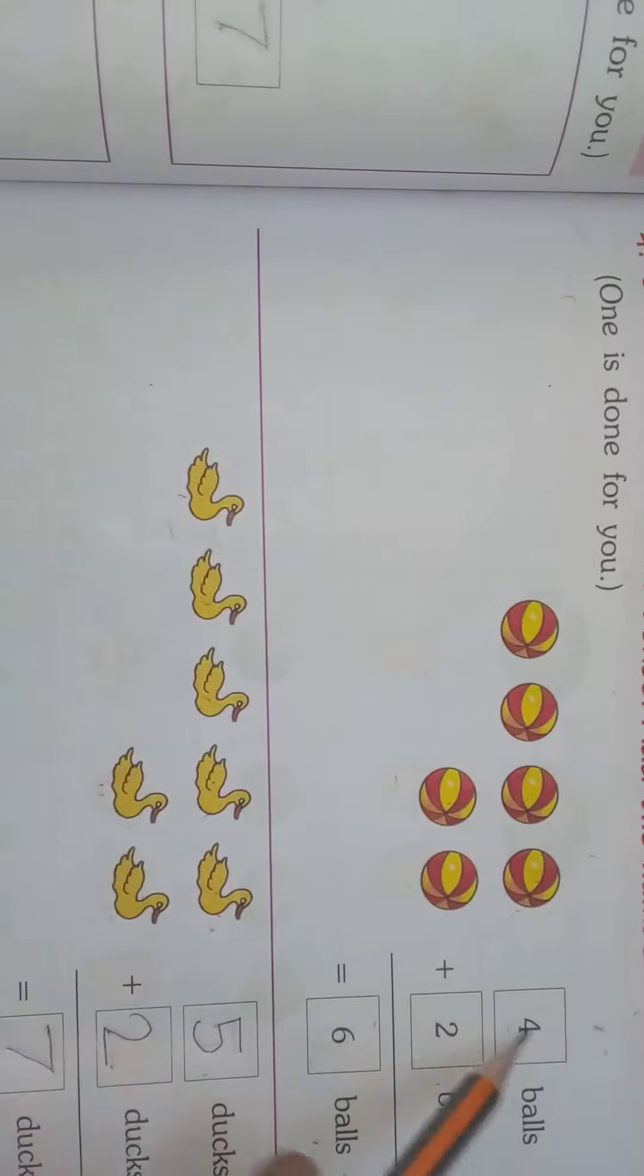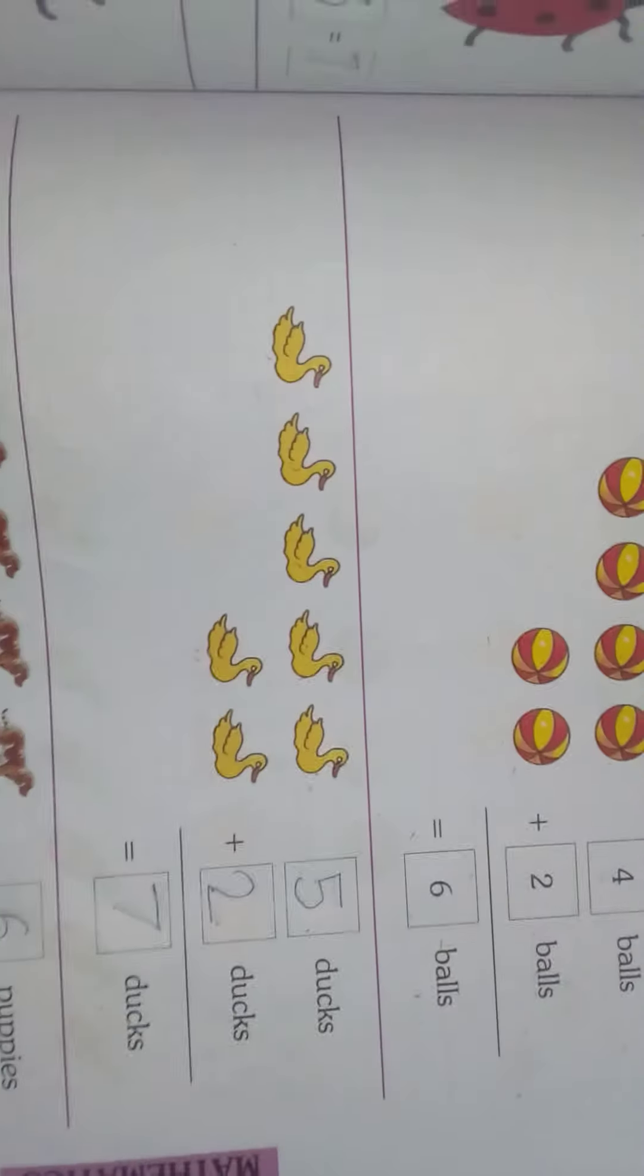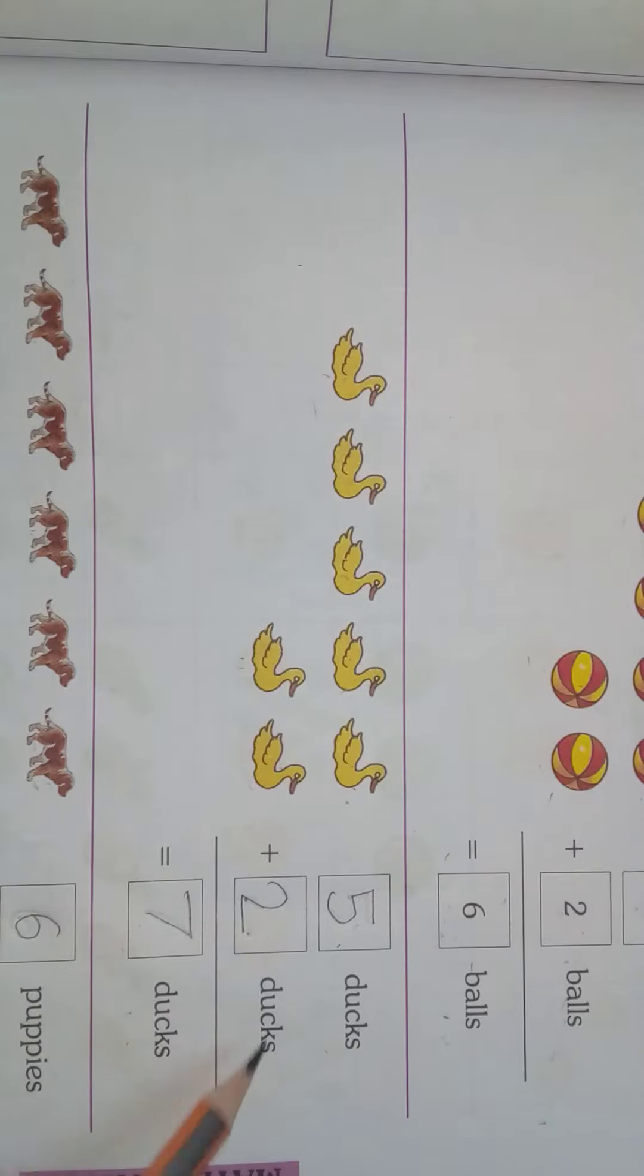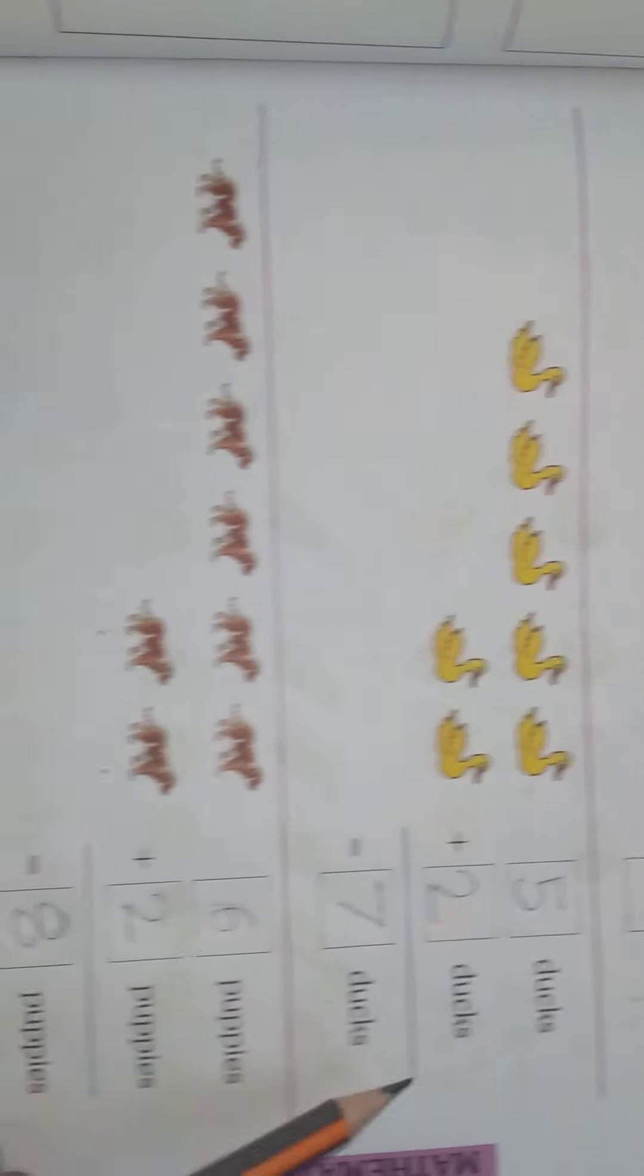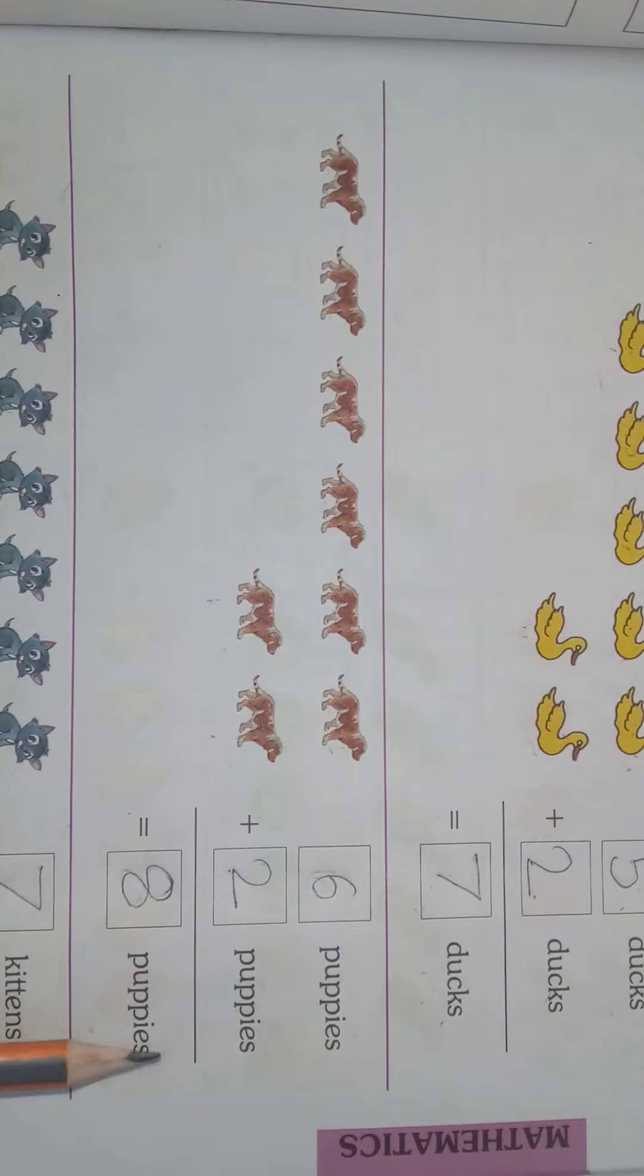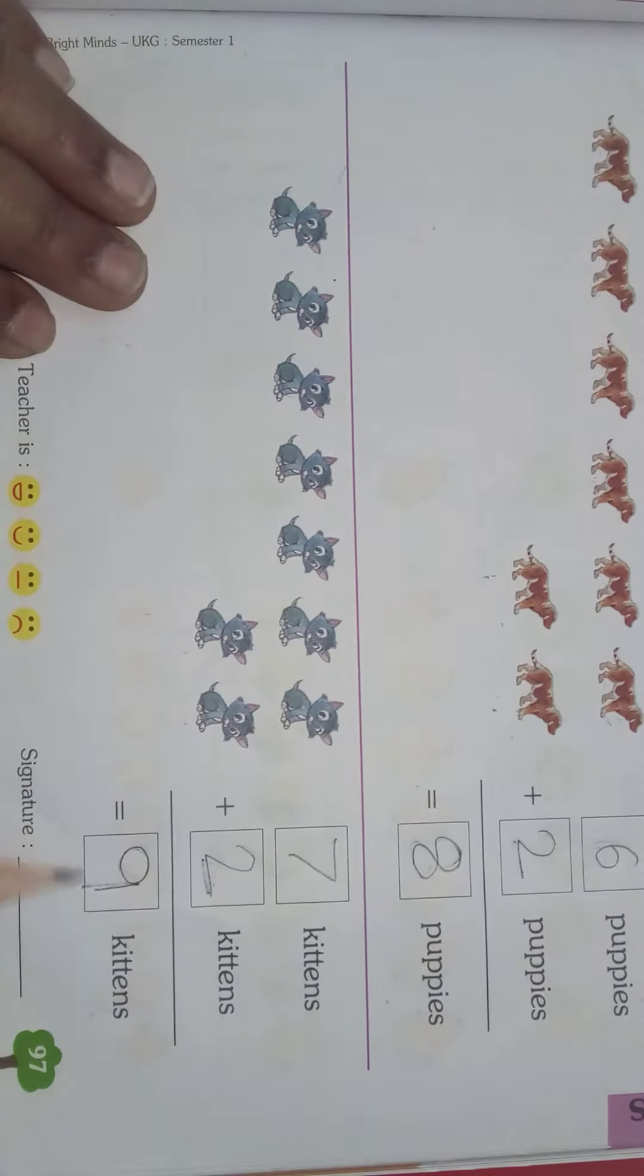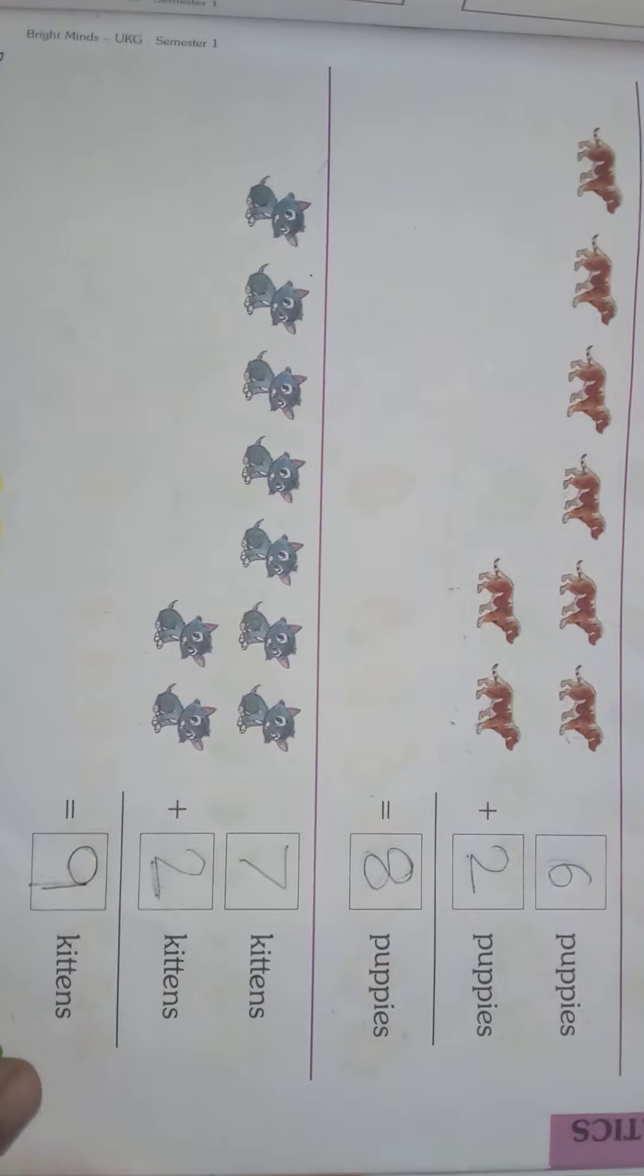Now from the first we will review: 4 balls plus 2 balls is equal to 6 balls. 5 ducks plus 2 ducks is equal to 7 ducks. 6 puppies plus 2 puppies is equal to 8 puppies. 7 kittens plus 2 kittens is equal to 9 kittens.